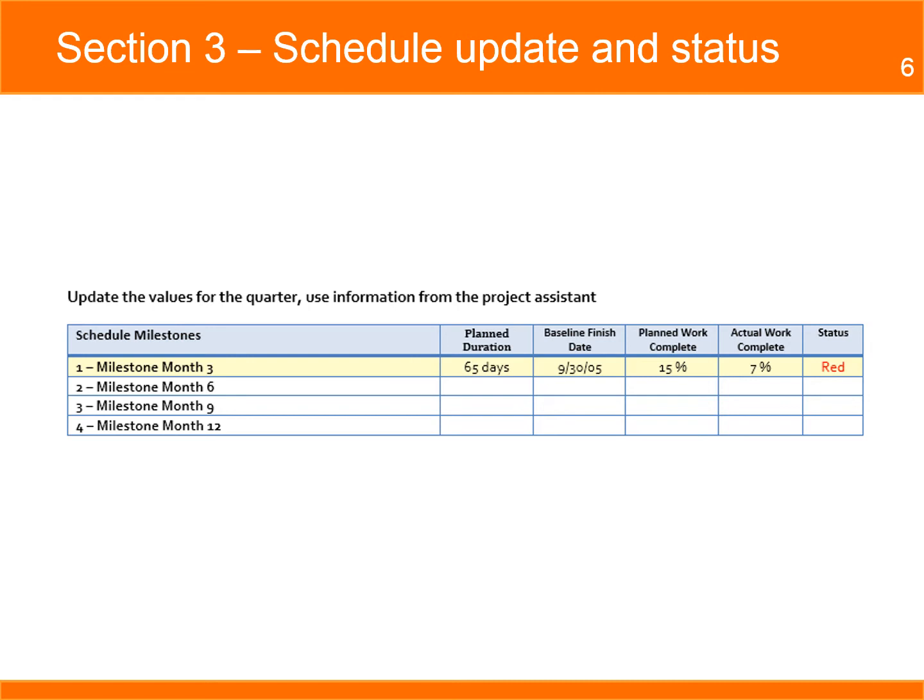The next box contains information about the schedule and progress made in the deliverable of all planned work. Every week you will receive an update on the status of the schedule. If the project is late by more than 10% of the planned schedule, the status is red.